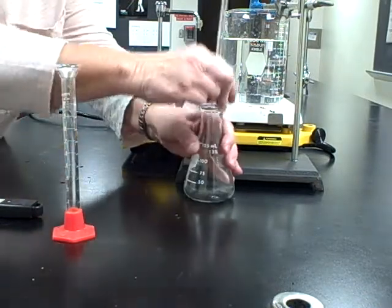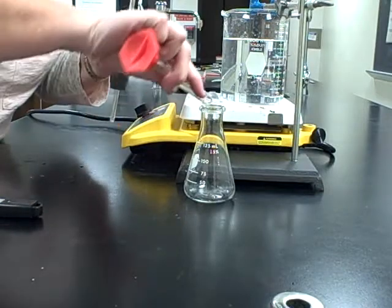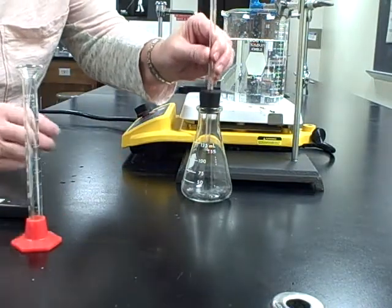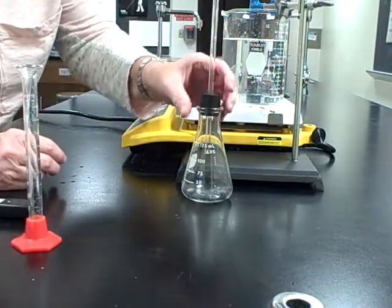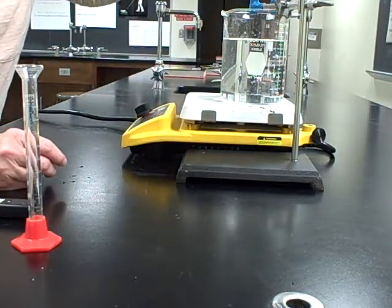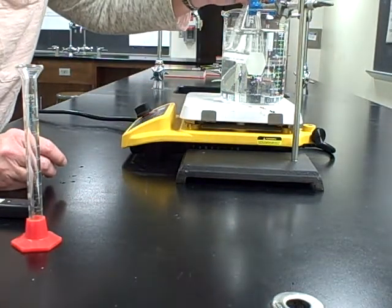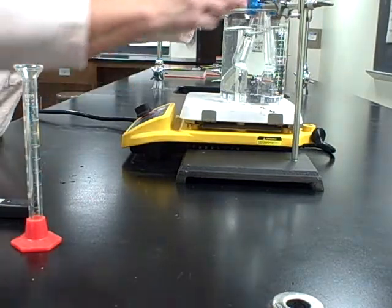Once I've put my volatile liquid in here, recap this right away in case any of it starts changing to a gas. Then step five says clamp the flask to a ring stand.